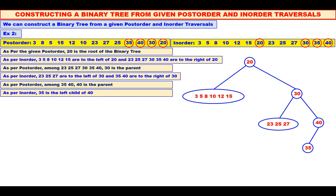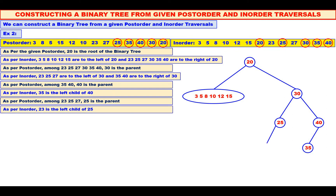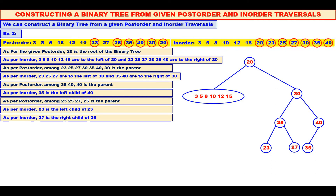Now, among 23, 25, 27, which is the root? See the post-order — 25. We will mark it and also mark the same in the inorder. Carefully observe the inorder: 23 is to the left of 25, and 27 is to the right of 25. Therefore, 23 should be the left child of 25 and 27 should be the right child of 25.